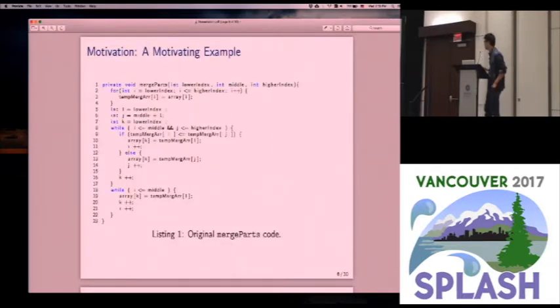So here is a motivating example. This is the merge function in the classic merge sort algorithm. Basically, you just get an array with two parts sorted, split by a middle index. The basic procedure to generate a single sorted array is that you declare two indices, and then you determine which index to move one step forward according to the related values.